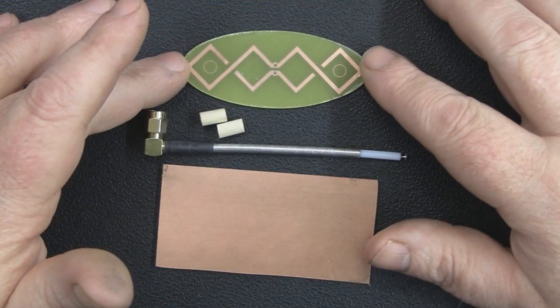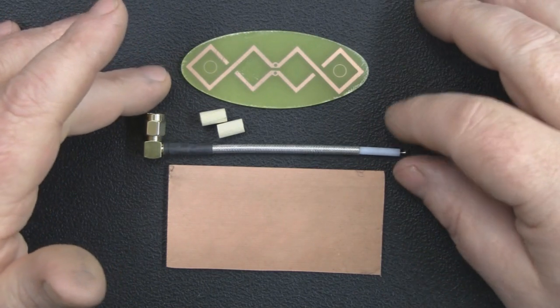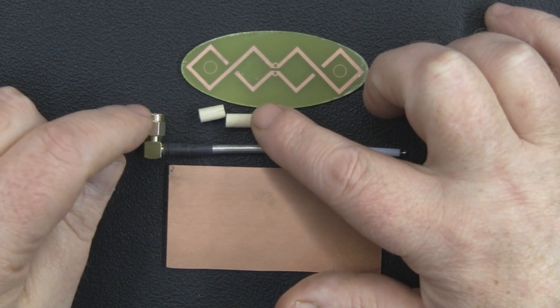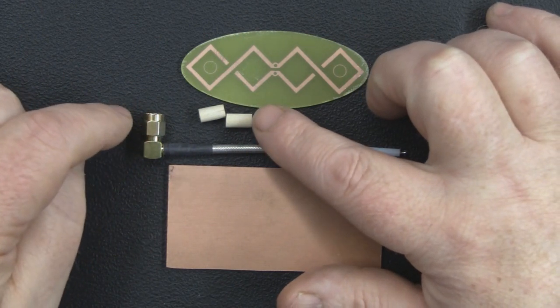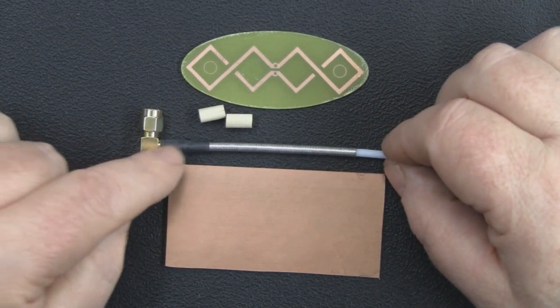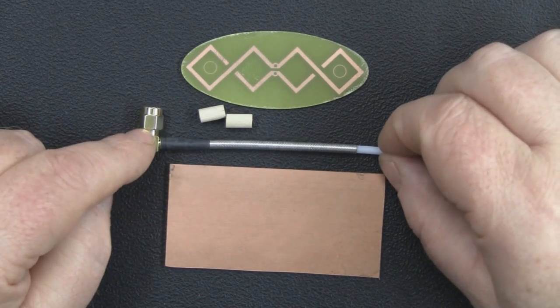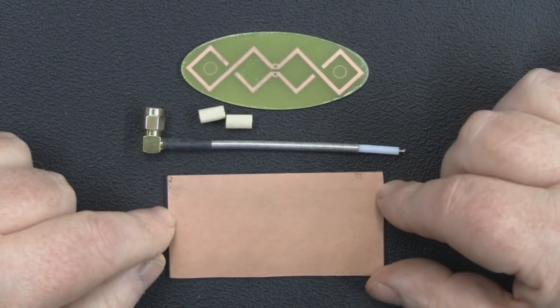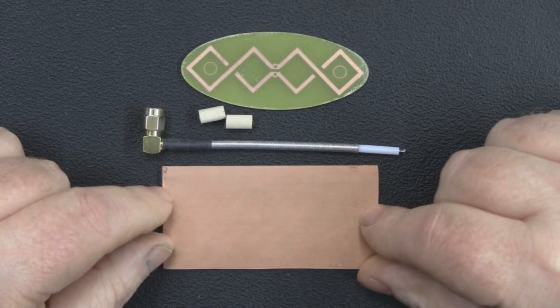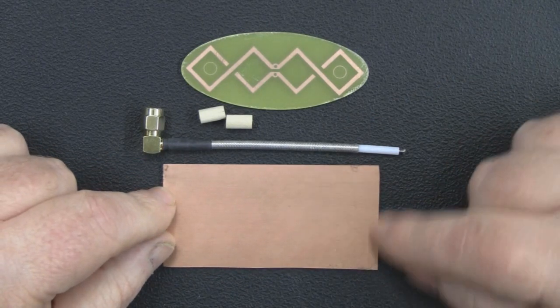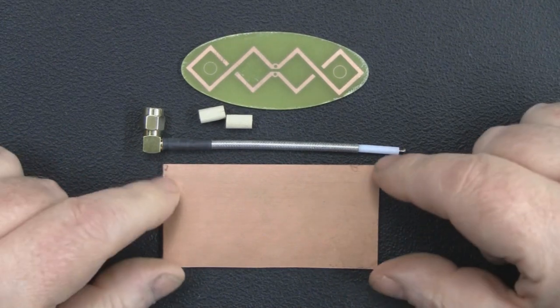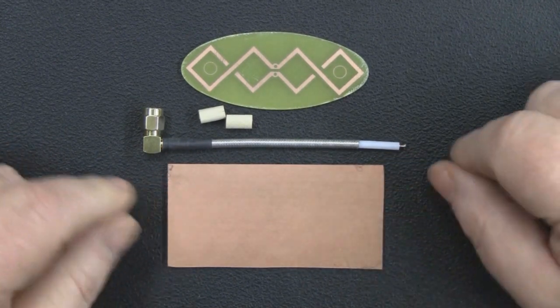Once you've got your element etched out you're going to need to gather up some other materials. I've got some lengths of dowel here that are 9mm long and 5mm in diameter, some semi-rigid coax that I've soldered onto one of these right angle connectors, and a piece of copper board that's 80mm by 40mm. I'll probably round the edges off on this just so it's not so sharp and looks a little bit nicer.